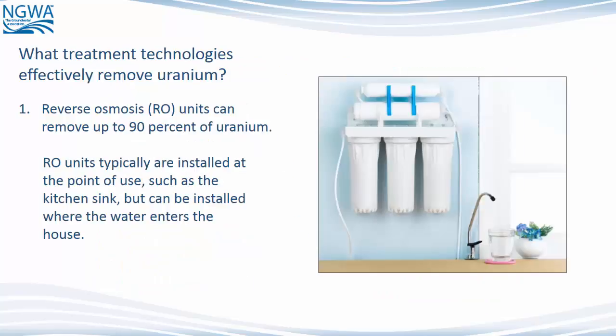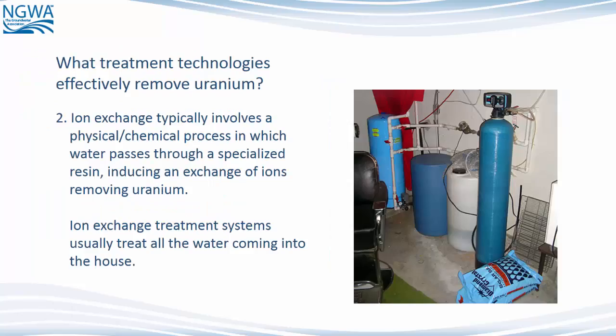What treatment technologies effectively remove uranium? First, reverse osmosis units can remove up to 90% of uranium. RO units are typically installed at the point of use, such as the kitchen sink, but can be installed where the water enters the house. A second option is ion exchange, which typically involves a physical-chemical process in which water passes through a specialized resin, inducing an exchange of ions removing uranium. Ion exchange treatment systems usually treat all the water coming into the house.